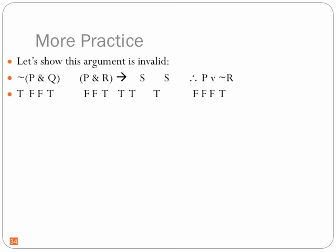The conclusion doesn't follow from the premises — like saying 'you live in Hollister, therefore you live in Santa Clara County.' We now have a mathematical, formal way to prove invalidity. We've given a case where premises are true and the conclusion is false, namely when P is false, Q is true or false (doesn't matter), R is true, and S is true. Practice these on your own — you need the four things: symbolization, truth conditions, find the main connective, and the definition of invalidity.